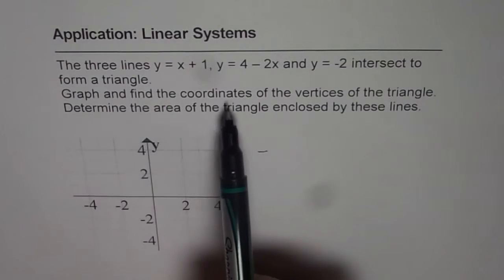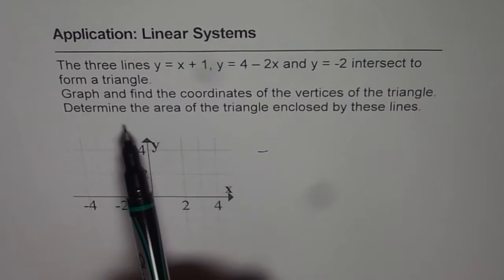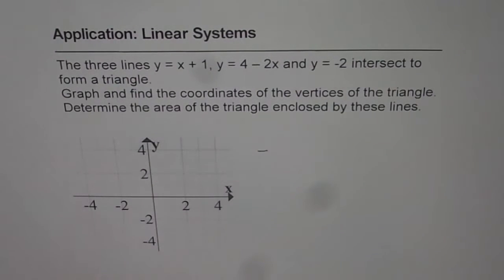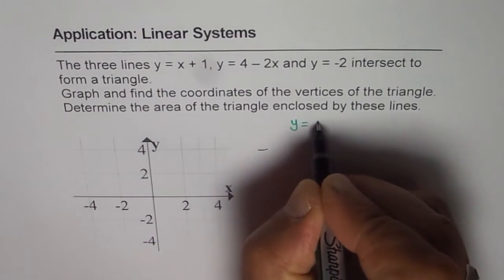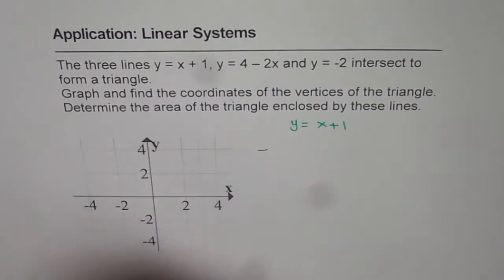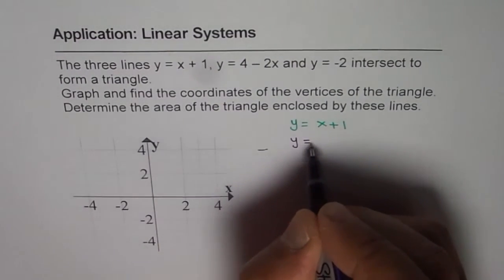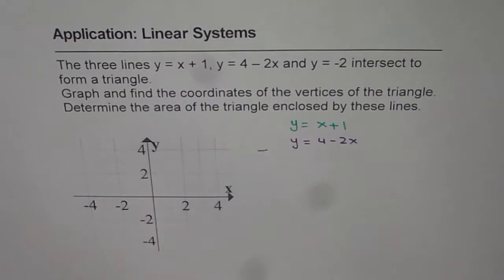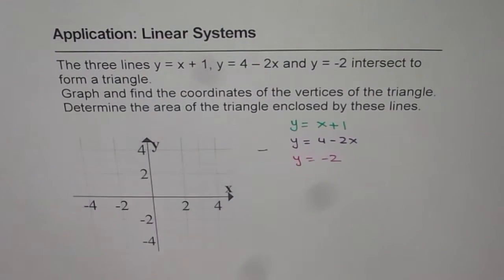Graph and find the coordinates of the vertices of the triangle. Determine the area of the triangle enclosed by these lines. So we're given three lines: y equals x plus 1, that's the first one. The second one is y equals 4 minus 2x, and then we have y equals minus 2. So these are the three lines.